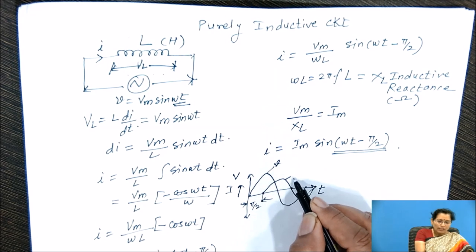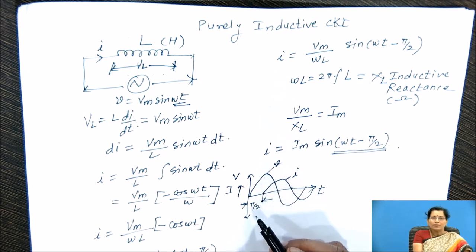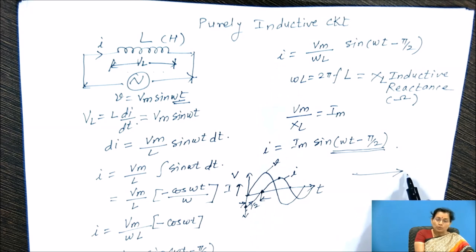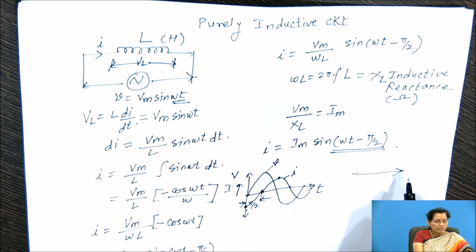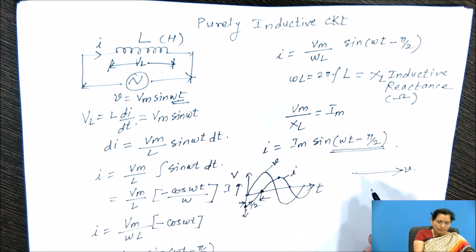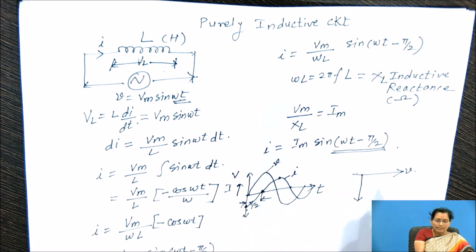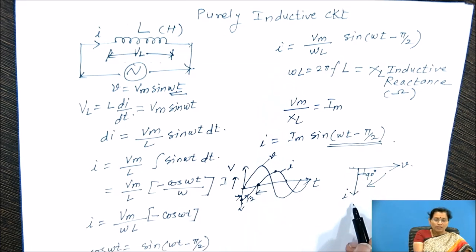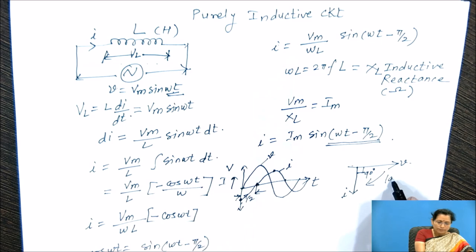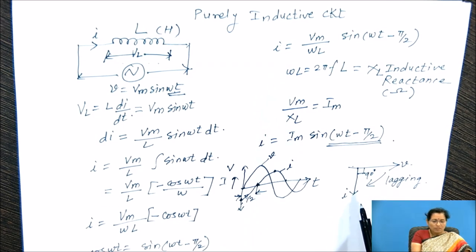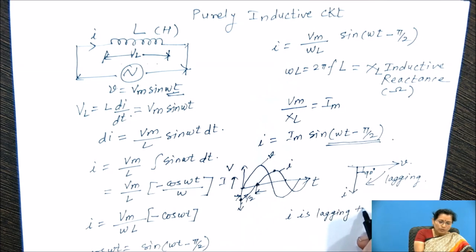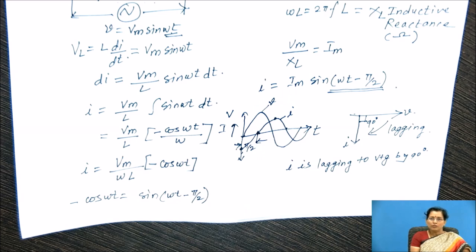Now we can draw the phasor diagram. The positive x-axis is the reference. On the reference we are going to consider the voltage — this is the voltage vector. Here the current is lagging to this voltage by 90 degrees, so here you can draw the current vector. This is the lagging direction. So we can say that the current is lagging to voltage by 90 degrees, and theta equal to 90 degrees.